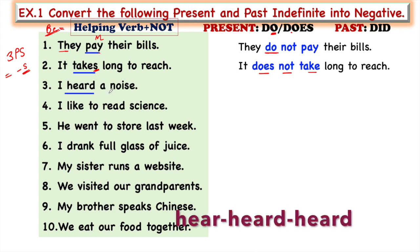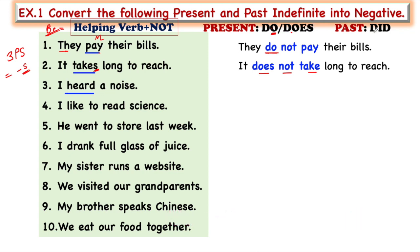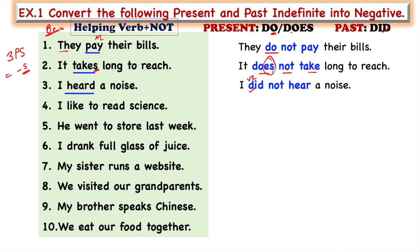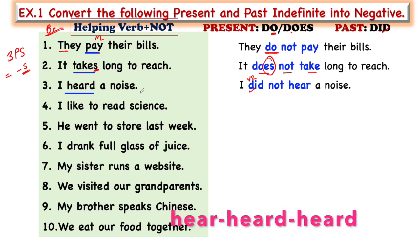'I heard a noise' is past indefinite tense, so for making it negative we take the help of 'did.' The result is: 'I did not hear a noise.' Why has 'hear' come in place of 'heard'? Because 'did' is already a second form, and two second forms cannot come together in one sentence — just as two S or ES cannot come together. When you use 'did,' you must use the first form of the main verb.